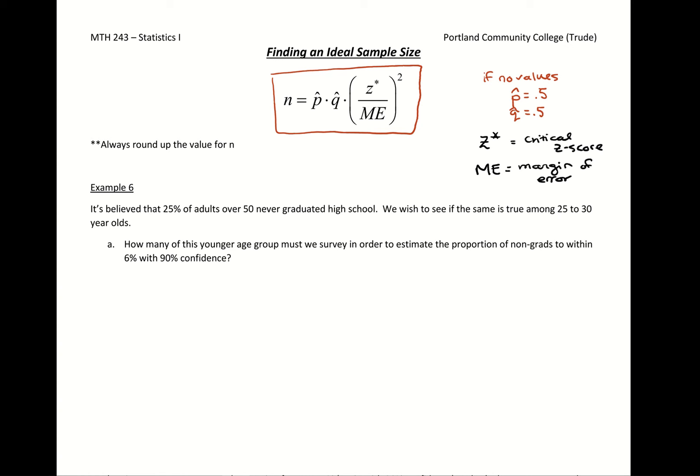So once we calculate, when we do this calculation you always round up the value for n. As soon as you have a little decimal afterwards, you always round it up.